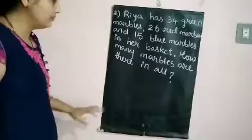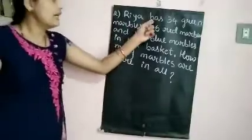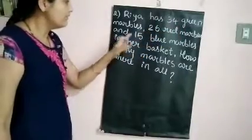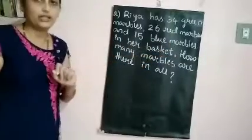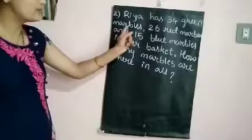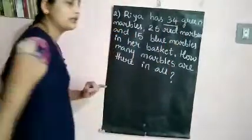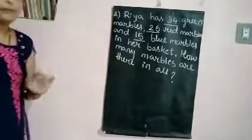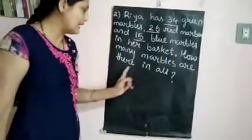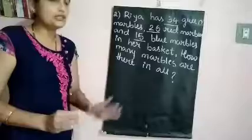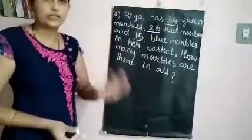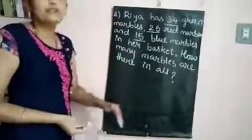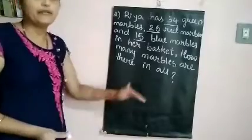Now let us look at the second problem. Rhea has 34 green marbles, 26 red marbles, and 15 blue marbles in her basket. How many marbles are there in all? We know 34 green, 26 red, and 15 blue marbles are there. To find the total, you have to add them.